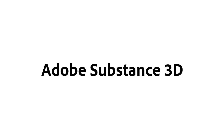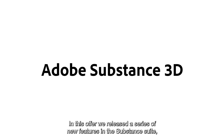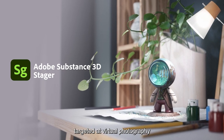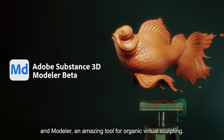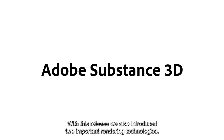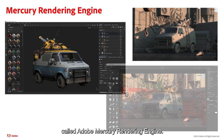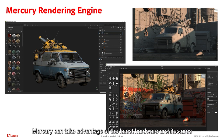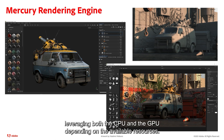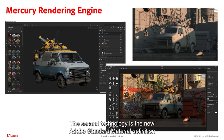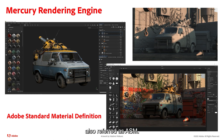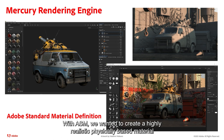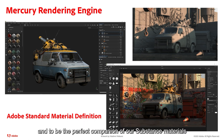On June 23rd of this year, Adobe released a suite of applications and web services under the new Adobe Substance 3D offer. We released new features in the Substance suite, but we also introduced new applications like Stager, targeted at virtual photography, and Modeler, an amazing tool for organic virtual sculpting. With this release, we also introduced two important rendering technologies. First is our unified rendering initiative called the Adobe Mercury Rendering Engine, comprising several rendering technologies providing high quality, fast, and interactive editing of 3D scenes. Mercury can leverage both the CPU and GPU depending on available resources. The second technology is the new Adobe Standard Material definition, also referred to as ASM, designed to efficiently run in Mercury and provide greater visual consistency across our applications.